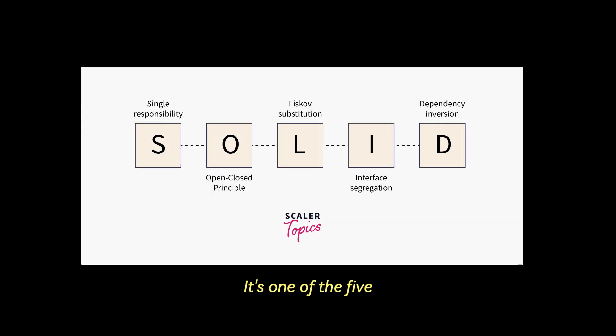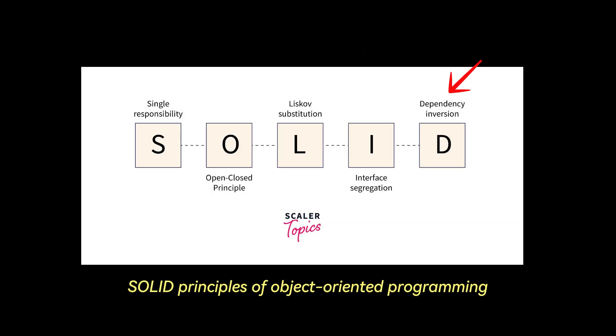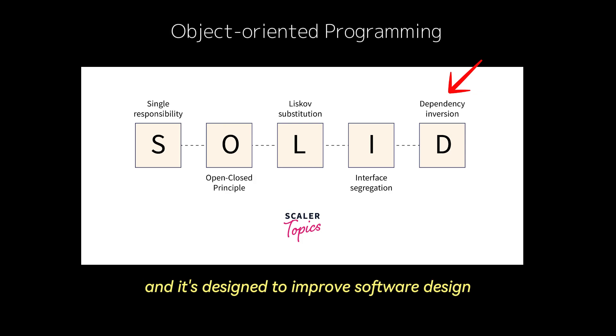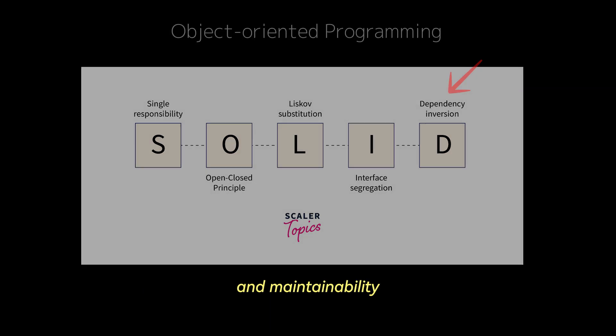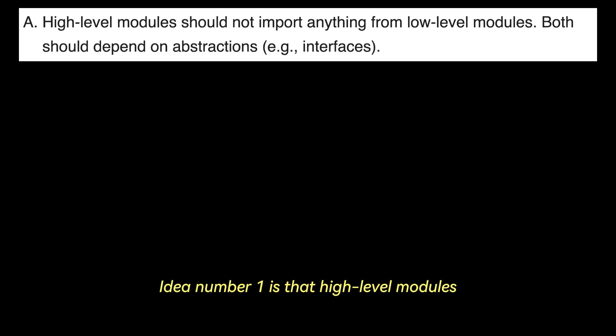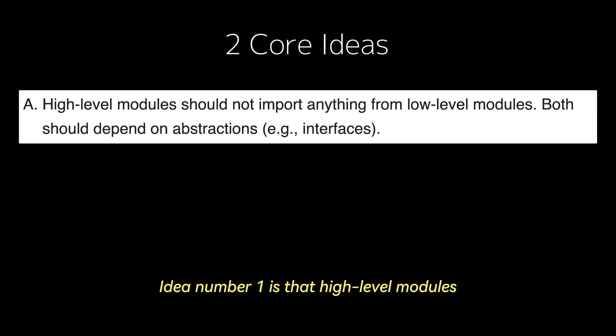It's one of the five SOLID principles of object-oriented programming and it's designed to improve software design and maintainability. And this comes in the form of two core ideas. Idea number one is that high-level modules should not depend on low-level modules.